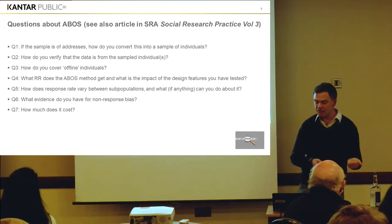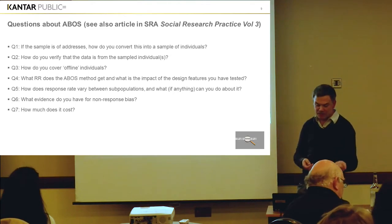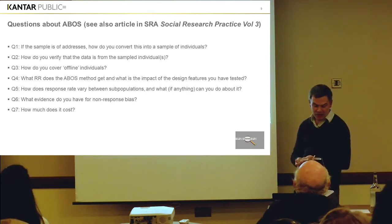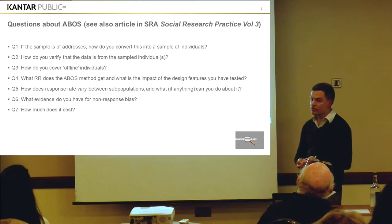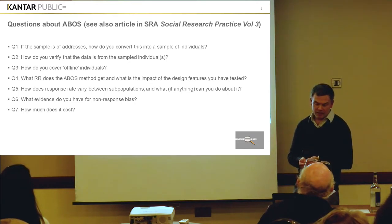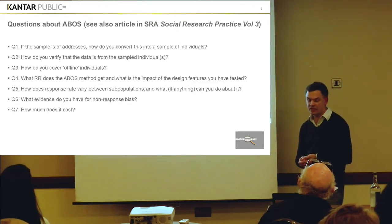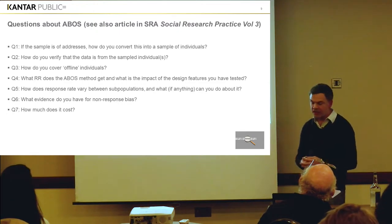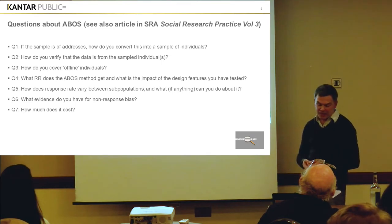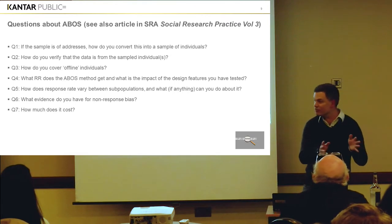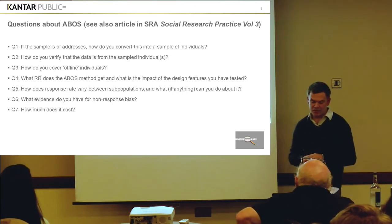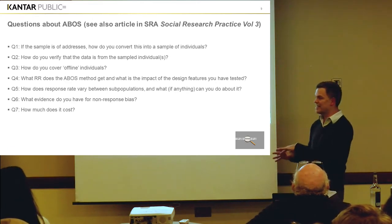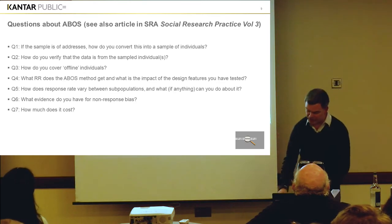So the seven questions were: first, if the sample is of addresses, how do you convert it into a sample of individuals? Second, how do you verify that the data you get is in fact from the sampled individual? Third, how do you cover offline individuals who are still part of the population? Fourth, what response rate do you get, and what's the impact of design features that you've tested? Fifth, how does response rate vary between subpopulations and what, if anything, can you do about it? Sixth, what evidence do you have for non-response bias on the actual substantive topics? And number seven, how much does it cost? I've got more evidence now than I had in that article.